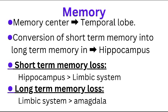Memory center is located in the temporal lobe, while the conversion of short-term memory into long-term memory occurs in the hippocampus. Short-term memory is affected when there is a lesion of the hippocampus or limbic system, and long-term memory is affected when the limbic system or amygdala is involved.